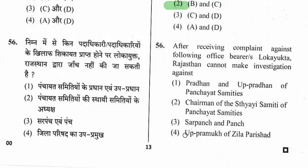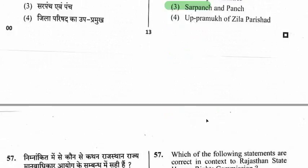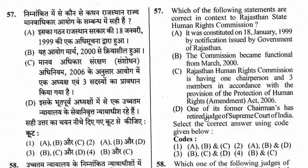Question 57: Which statements are correct about the Rajasthan State Human Rights Commission? It was constituted on 18 January 1999 by notification of the Government of Rajasthan. The commission became functional in March 2000. It has one chairperson and three members per the Protection of Human Rights Amendment Act 2006. One of its former chairpersons was a retired judge of the Supreme Court.